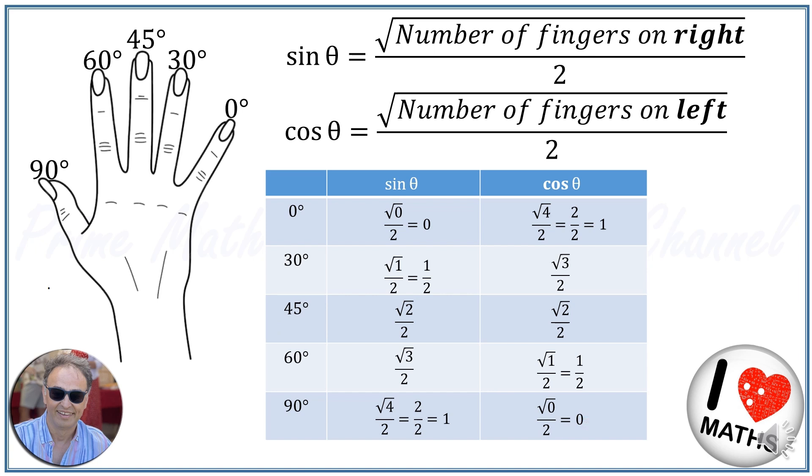Easy peasy! And oh, don't forget about tangent. It is simply sine divided by cosine. So with this handy trick, you've got everything you need to ace those trig problems. Simple, right? Carry this trick with you and you'll never forget those sine and cosine values again.